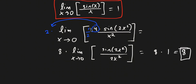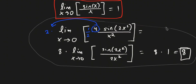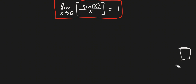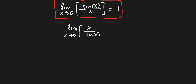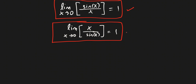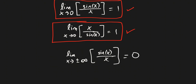Another closely related property is that the limit as x approaches 0 of x over sine x is also equal to 1. Both of these properties are true. In the next video, we'll be dealing with another property: the limit as x approaches infinity, or negative infinity, of sine x over x, and we're going to see how this works out to equal 0. That's a topic for the next video.